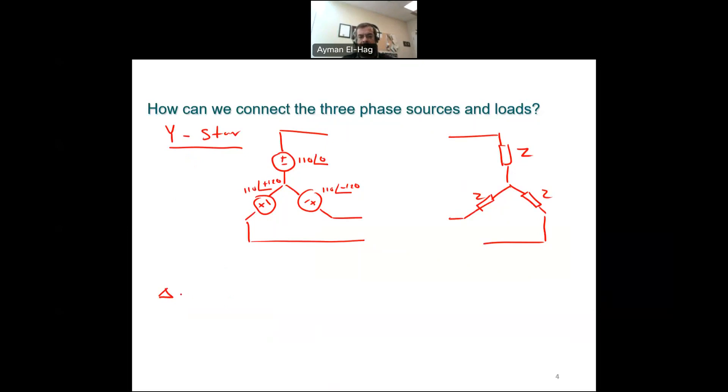The second one, we will have the delta connection. In the delta, the supply will be plus minus. We call it delta because it looks like a delta, as simple as that. So this is the three phase. And the load as well will be connected in delta. We will have here, again, each load will have exactly the same value, Z. Now, how do we do the connection? We have definitely four different possibilities. Either you connect star star, meaning that the supply is a star and the load is a star, or star delta, or delta star, or delta delta. These are the four different types of connections that you could have in the three-phase system.